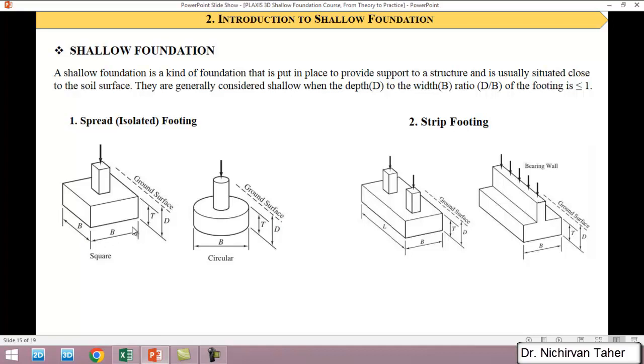There are some types of shallow foundation. One of them is isolated footing or spread footing. This is a very common type of shallow foundation. It can be circular, square, or rectangular, and this type of foundation is generally used when the ground has enough strength and bearing capacity and is used for lightweight structures.